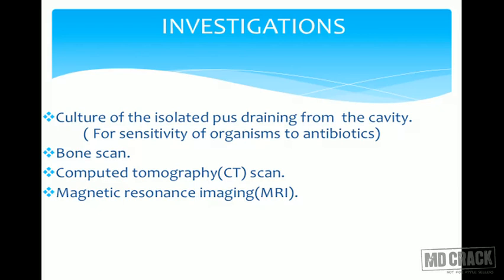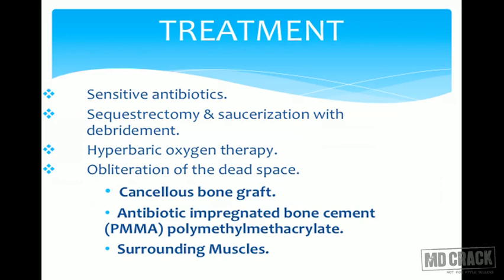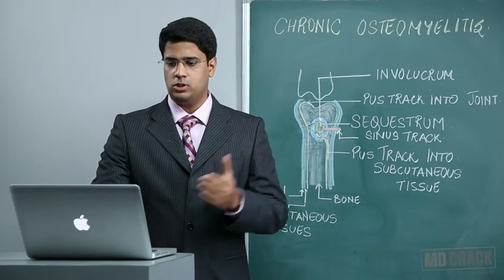Culture also helps determine antibiotic sensitivity. Other investigations include bone scans, CT scan, and MRI. Treatment involves giving appropriate antibiotics — intravenous injectables as well as oral antibiotics — based on organism sensitivity. Operatively, sequestrectomy — removal of the sequestrum — is the essential procedure. Saucerization converts a flat surface into a cup-like structure, along with radical debridement of the infected area.